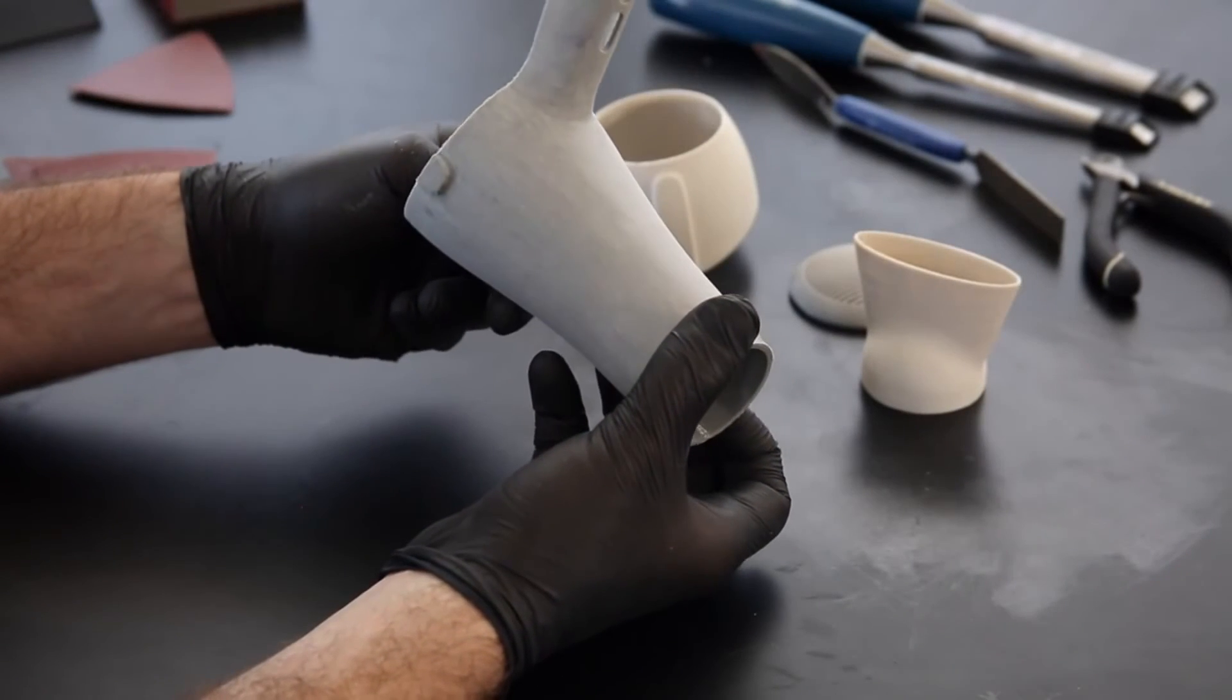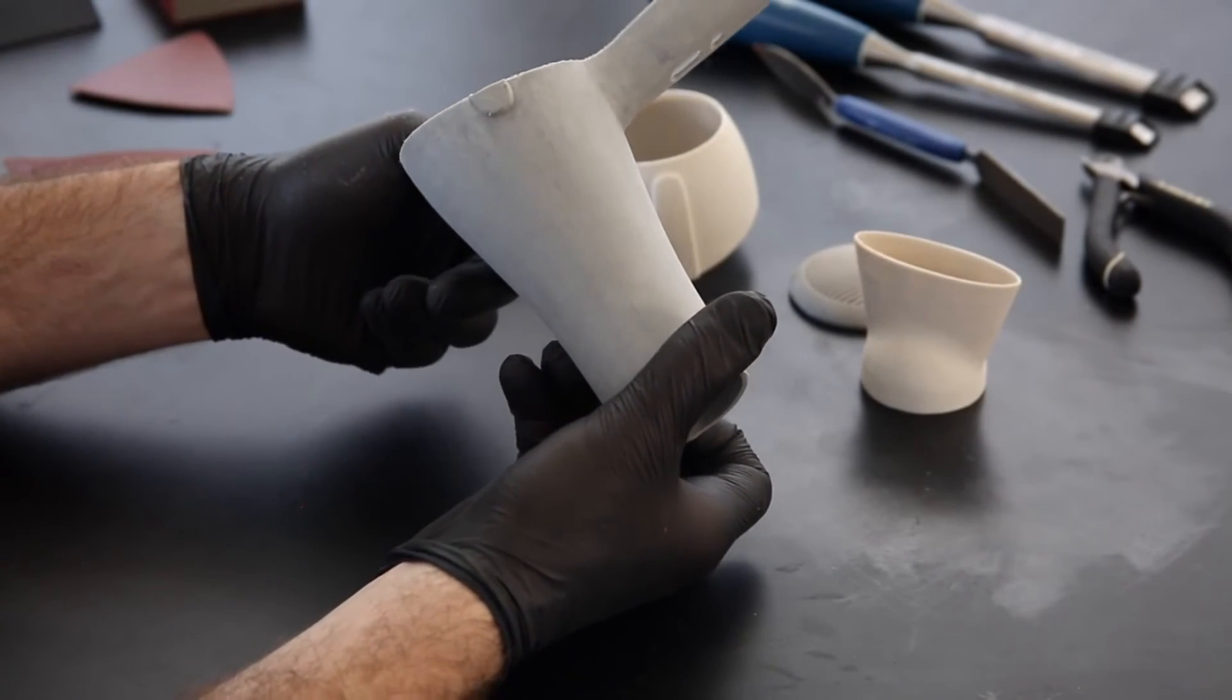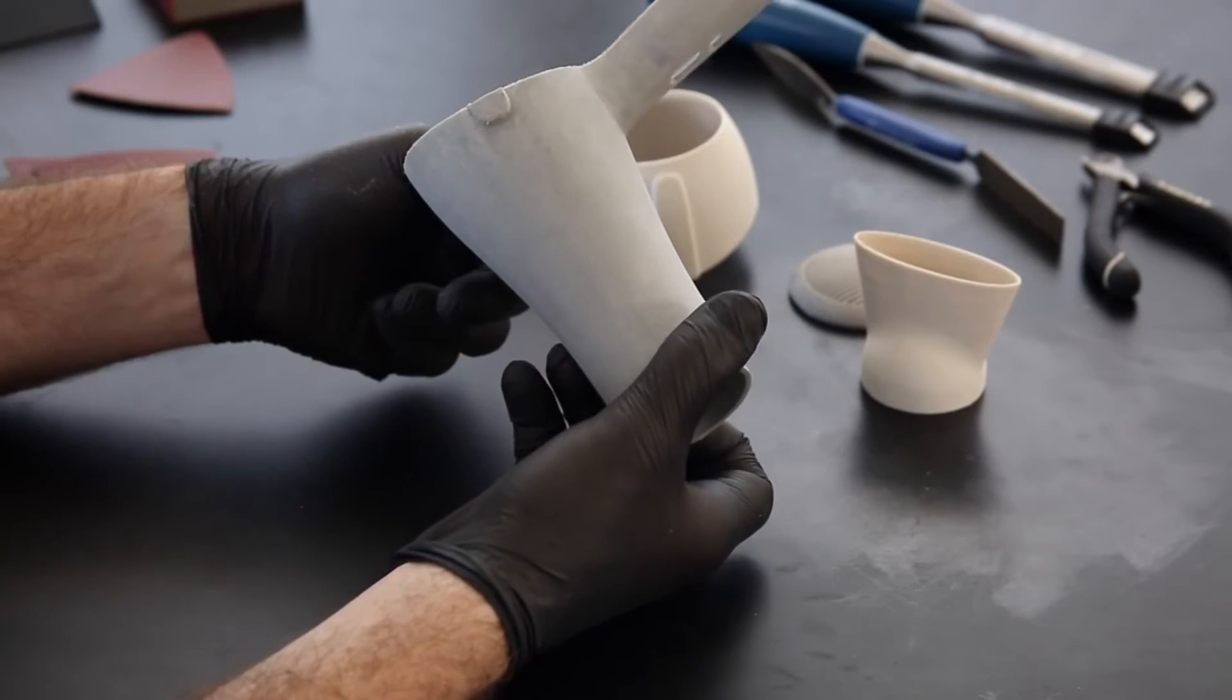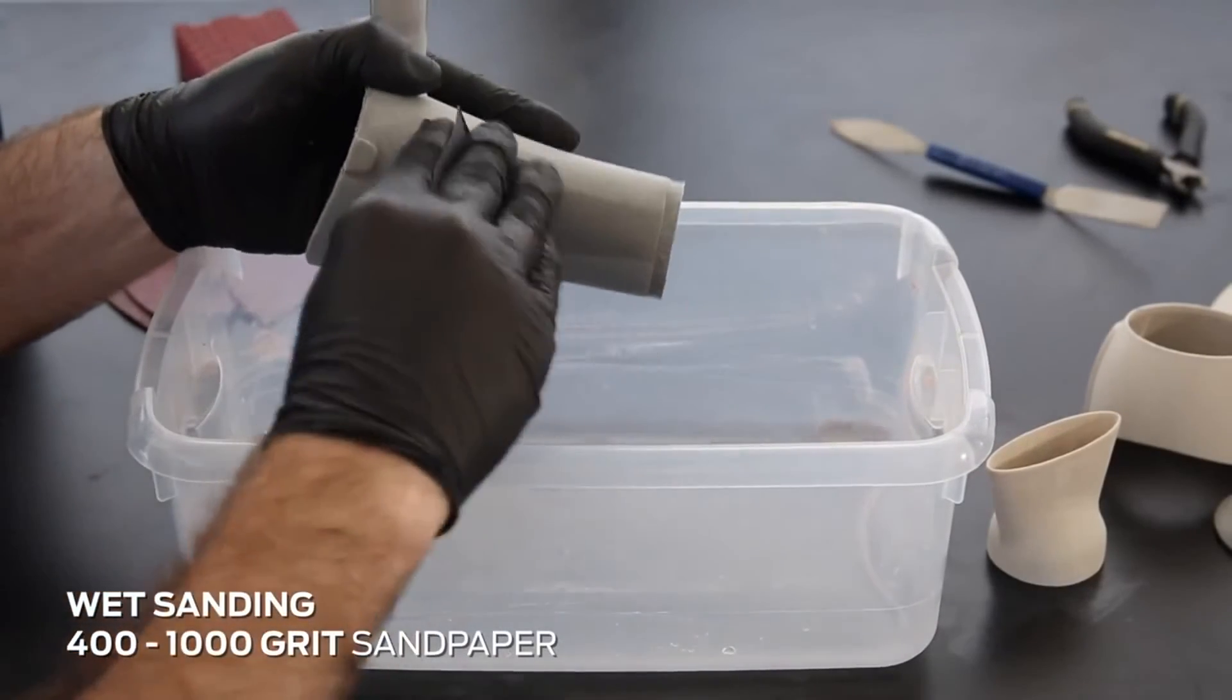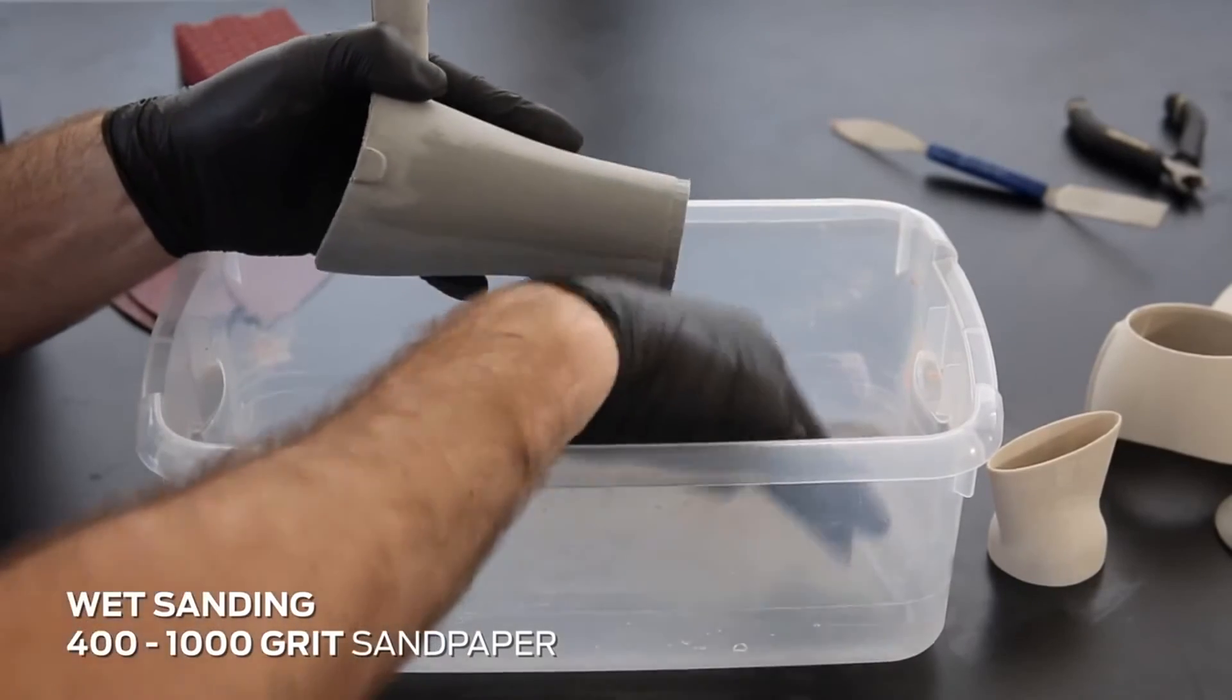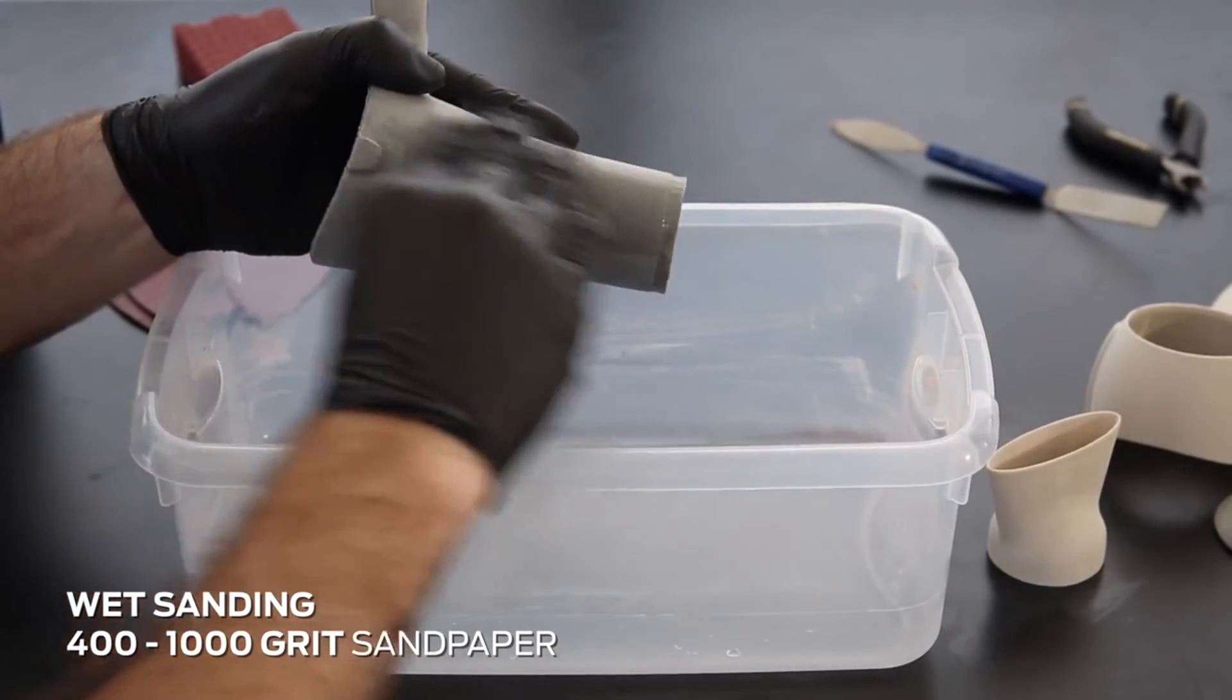Once you have sanded through 80, 120, and 240 grit sandpaper, we suggest wet sanding with 400 to 1000 grit sandpaper to achieve a completely blemish-free surface.